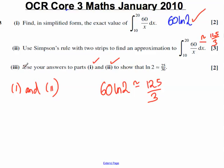Let's just have a look back at what our question is asking us. Use your answers to show that ln 2 is approximately this. We've almost got that. If we divide both sides by 60, we would get that ln 2 is approximately equal to 125 over 3 times 60.